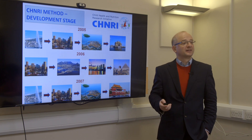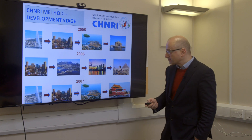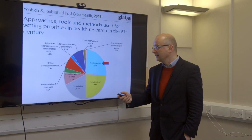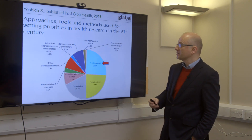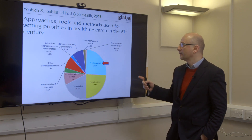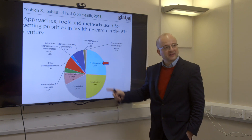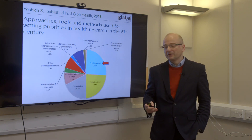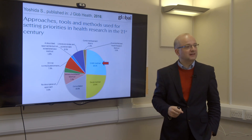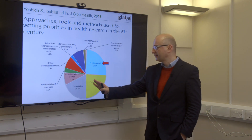We started in 2005. I invited those people firstly to Geneva, and then we kept meeting about four times a year in all these lovely places. We got together as a group really well and kept meeting through 2006 and 2007. Unfortunately, in 2007 in Beijing, we ran out of money. At that point, we realized we needed to publish what we had done and present to the world what is now known as the CHNRI method for setting research priorities.